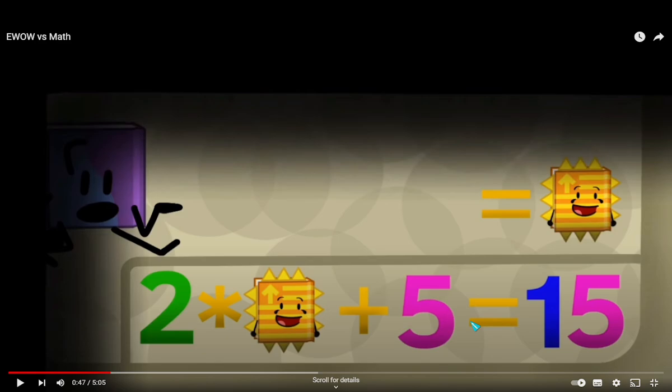Two times Mr. Tweester plus five is 15. So, if we do Bob Maths, two times five is 10, which means Mr. Tweester is five. Wait, I have an idea.